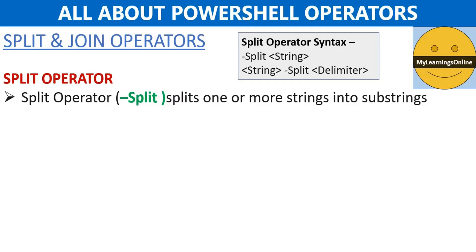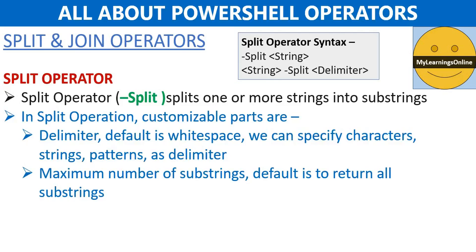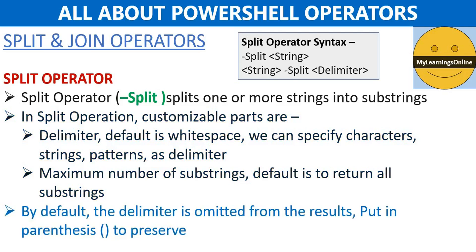Next one is split and join operators. First we will discuss the split operator. The split operator is used to divide one or more strings into substrings. While using split operator, we can define what should be the delimiter and how many maximum substrings we want to get as output. The syntax has two parameters: string and delimiter. Whitespace is the default delimiter. By default the delimiter is omitted from the results.